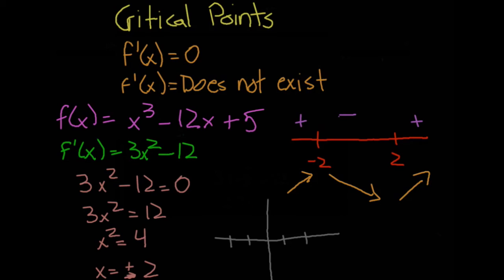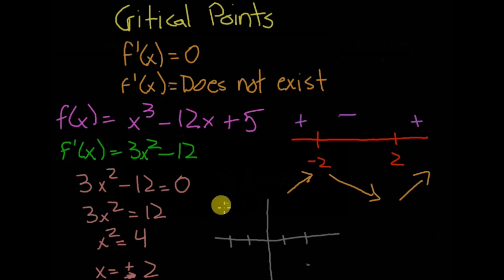Plugging in negative two gives negative 8 plus 24 which is 16, plus 5 which is 21. Then plugging in positive two gives 8 minus 24 which is negative 16, plus 5 is negative 11.